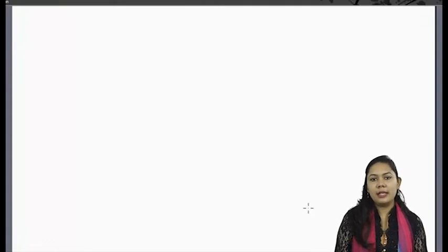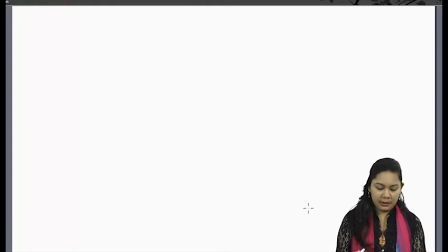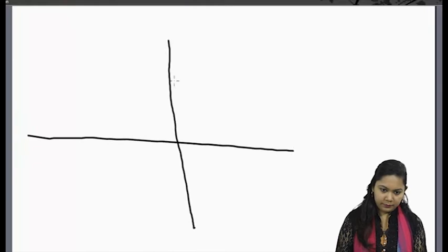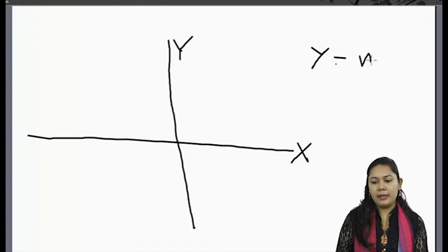Now discussing coordinate geometry. Here is the coordinate point. The vertical axis is Y and horizontal axis is X. The equation is Y equal to mx.